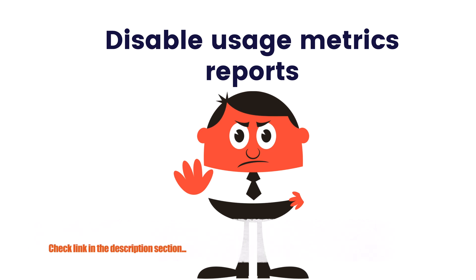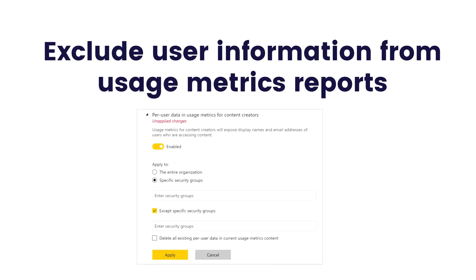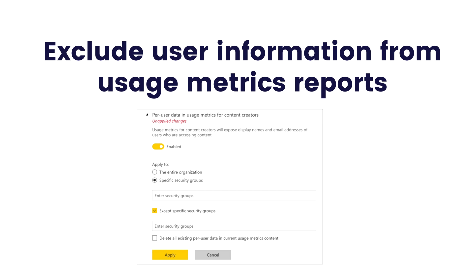Now let's discuss how to disable the usage metrics report. In my last video I showed you how to do this via the Power BI admin portal — there is a usage metrics section there where you can disable usage metrics. You must be the Power BI admin to do that. The next part is excluding user information from usage metrics reports. You can put users' email addresses into specific security groups to exclude them from these metrics. Check the link in the description or watch my previous video for details.